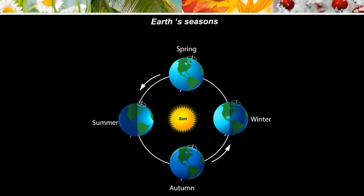What are seasons? Every year our planet experiences four seasons: summer, autumn, winter, and spring. As Earth moves around the sun, it spins in a slightly tilted position. This tilt is what causes our seasons because through the year, different parts of the planet are closer to or further away from the sun's light.